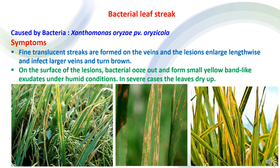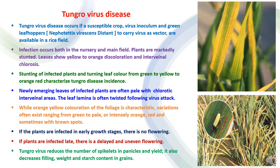Bacterial leaf streak is another bacterial disease caused by Xanthomonas oryzae pv. oryzicola. Fine translucent streaks are formed on the veins and the lesions enlarge lengthwise. It can infect larger veins and cause browning. On the surface of the lesions, bacterial ooze comes out and forms small yellow bead-like exudates under humid conditions. In severe infection, the leaves may dry up.